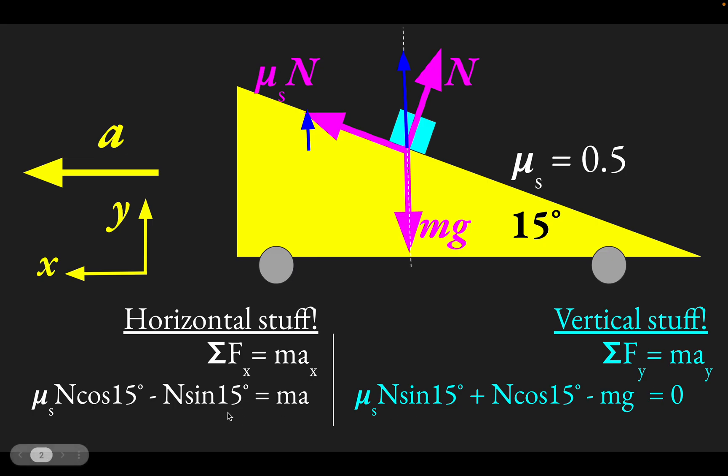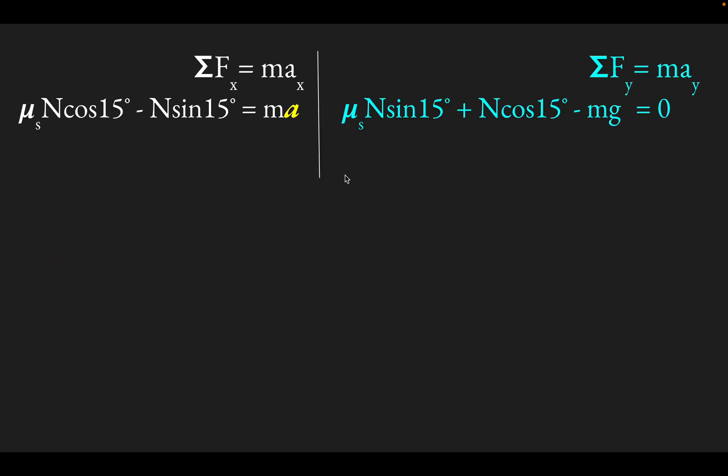Once you're here, your physics teacher will actually be pretty happy because the physics is actually done, this is now just a math problem, an algebra problem. We have two equations for two unknowns. We have the unknown N and we have the unknown a, which is actually what we're looking for in this problem. So we need to figure out what this a is. So we can work through the algebra a little bit. Here's our situation set up. Here's our variable a that we're looking for. And here's our two equations that we just derived.